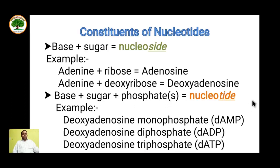Let's see the constituents of nucleotides of DNA. When ribose sugar is added with a nitrogenous base, it is called a nucleoside. For example, when adenine is added to ribose sugar, it is adenosine.